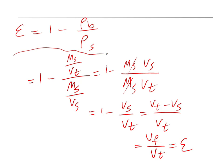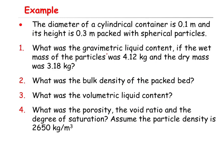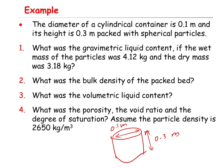Now an example. A cylindrical container has a diameter of 0.1 meter and a height of 0.3 meter, packed with spherical particles. The wet mass of the particles is 4.12 kg, and the dry mass is 3.18 kg. Find: the gravimetric liquid content, the bulk density, the volumetric liquid content, the porosity, the void ratio, and the degree of saturation. Assume particle density is 2,650 kg per cubic meter.